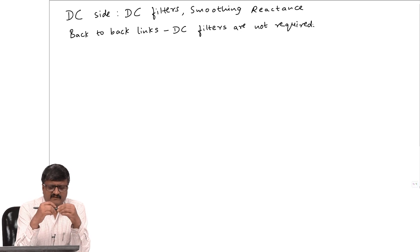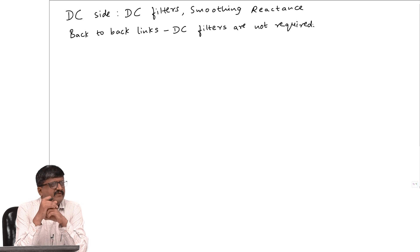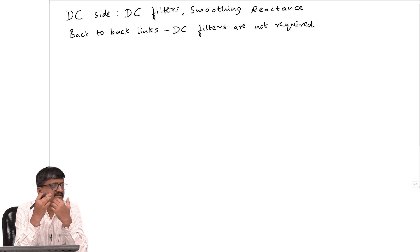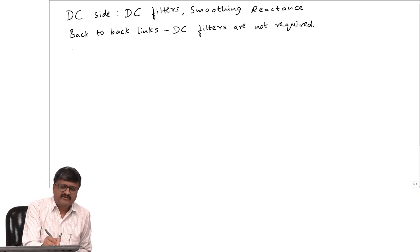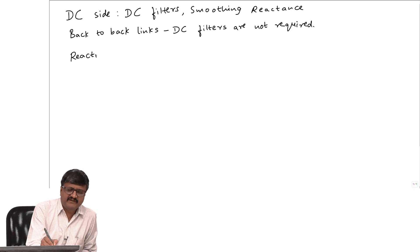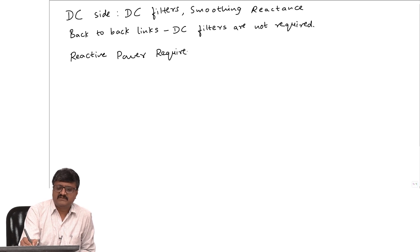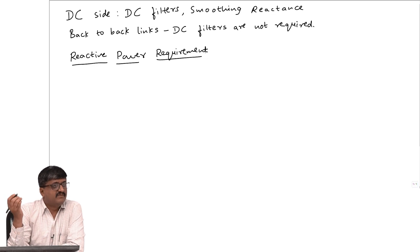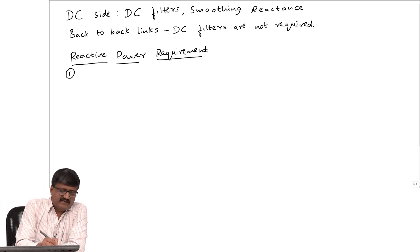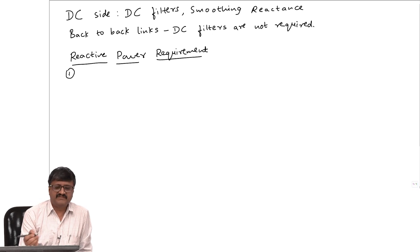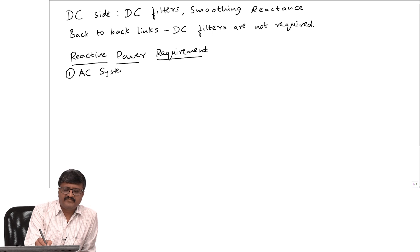That is about filters. We will briefly look at one more equipment required in a DC transmission system. We saw that reactive power is actually absorbed by the converter. So, from where does this reactive power come? If we do not provide any additional source, then the AC system itself supplies the reactive power — that is one option.